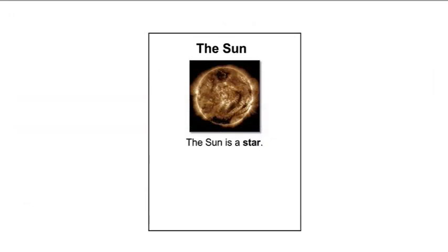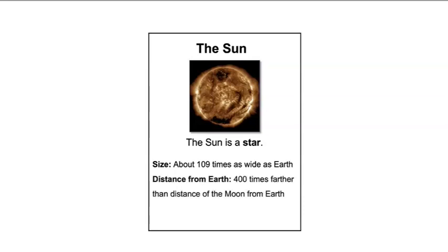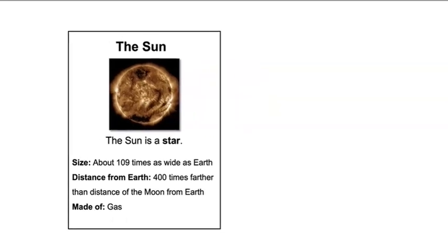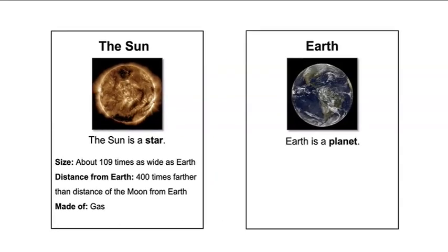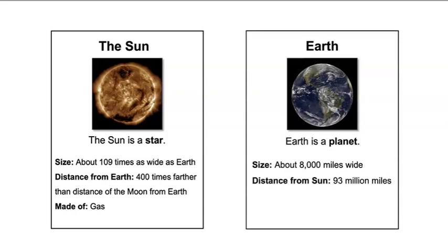We know that the sun is a star. The sun is about 109 times as wide as Earth. The sun is 400 times farther than the distance of the moon from Earth. And the sun is made of gas. We also know that Earth is a planet. Earth is about 8,000 miles wide and 93 million miles from the sun. Earth travels around the sun, and Earth is made of rock.